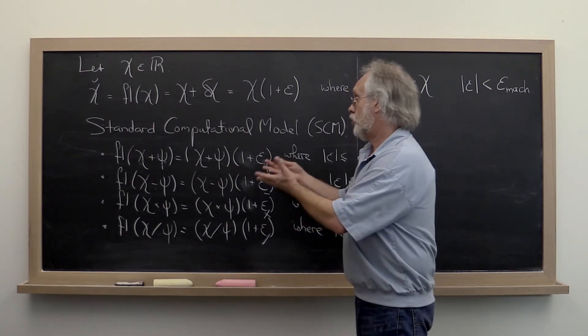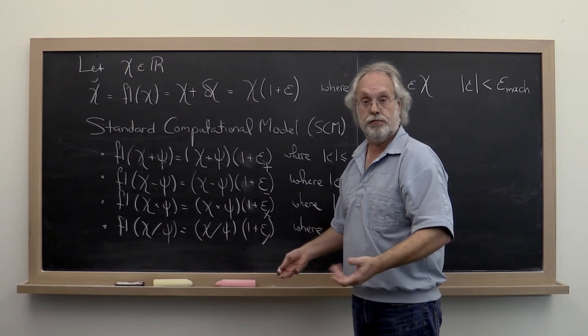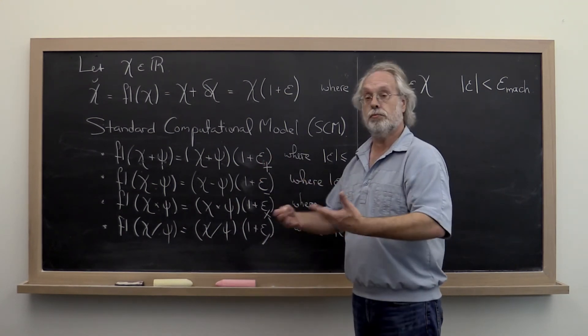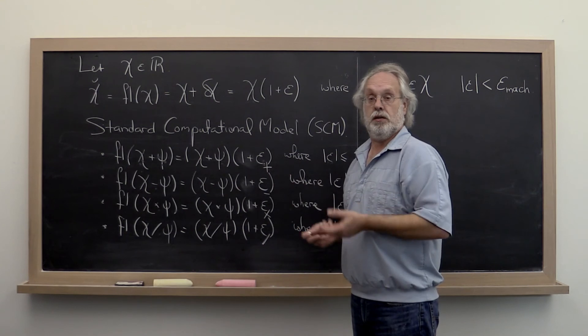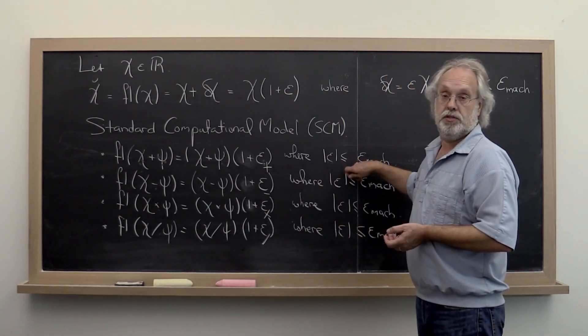And if we perform multiple additions in an operation, for example, then each of the epsilons that you run into may actually be a slightly different value, all of them bounded by the machine epsilon.